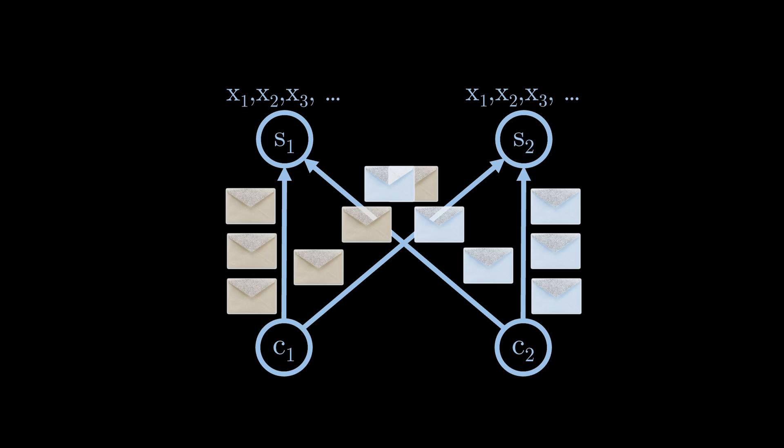In the state replication problem, there are multiple nodes, called servers, that must maintain the same state over time when interacting with clients even in the presence of failures. All nodes communicate by exchanging messages.